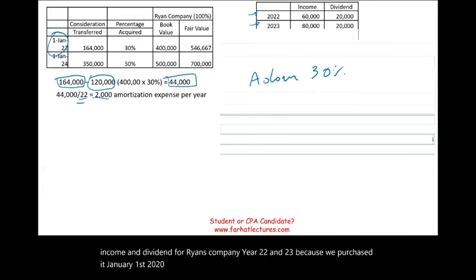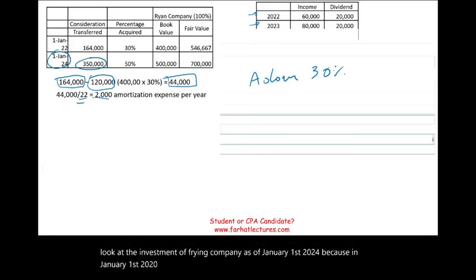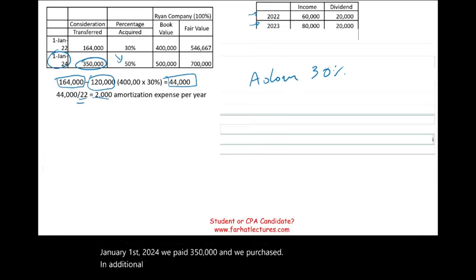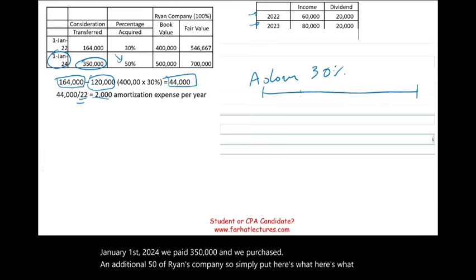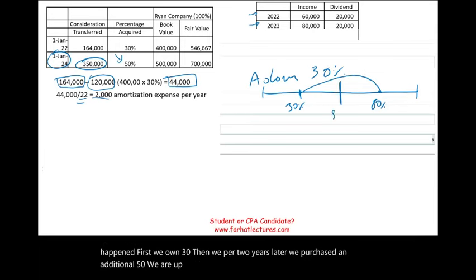The income and dividend data for Ryan's company covers years 2022 and 2023, since the purchase was made January 1st, 2022. On January 1st, 2024, Adam paid $350,000 and purchased an additional 50% of Ryan's company. So we went from owning 30%, then two years later purchased an additional 50%, bringing us to 80% — above 50%, meaning we are now in control.